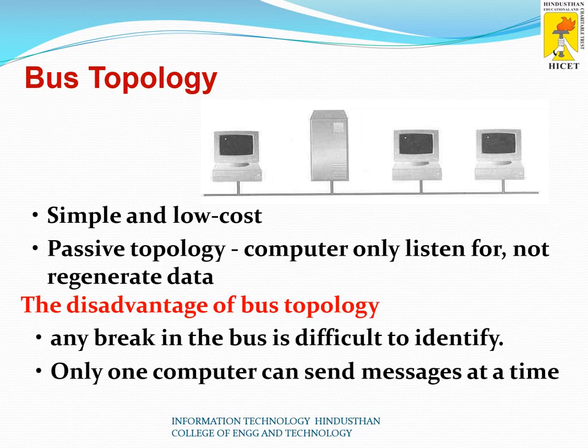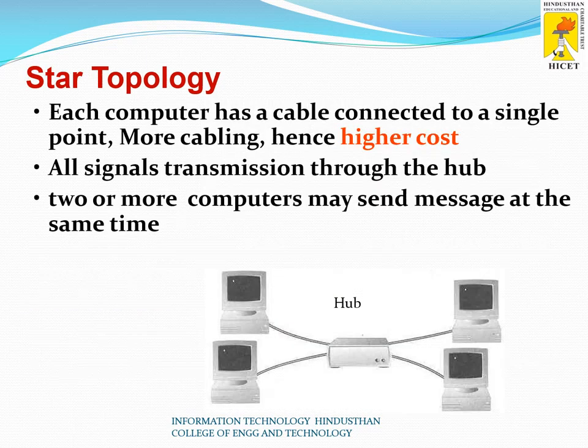The disadvantage of bus topology is that since we are using a single cable, if there is any break in the bus, it is very difficult to identify where the damage has occurred. Also, only one computer can send a message at a time, which is another disadvantage of bus topology. This is why we consider star topology, where each computer has a cable connected to a single central point called a hub.